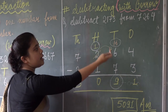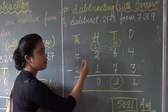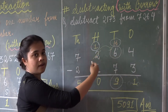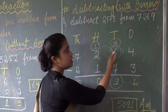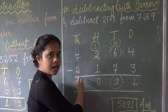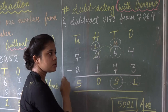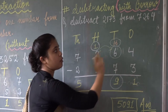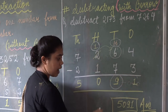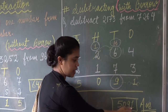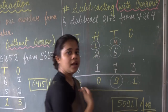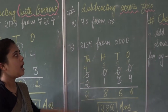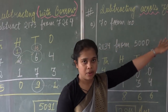If the number from which you have to subtract is smaller, then you have to borrow from the other number. In addition or subtraction, you always have to start from the ones place. So the answer is 5091.